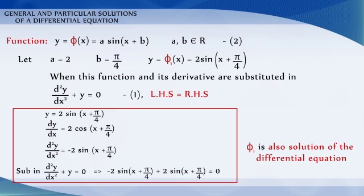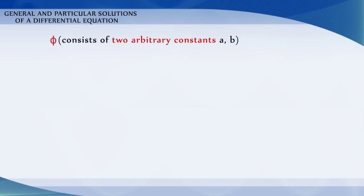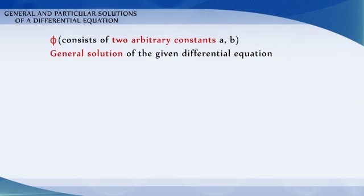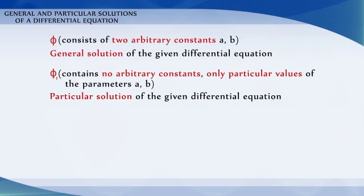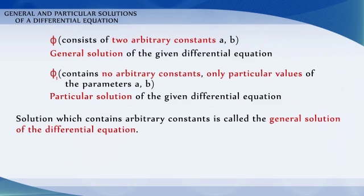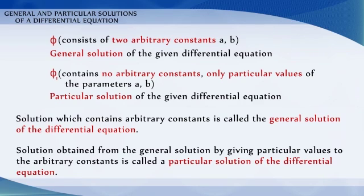Therefore, the function phi consists of two arbitrary constants a and b, and it is called the general solution of the given differential equation. Whereas, function phi 1 contains no arbitrary constants but only the particular values of parameters a and b, and hence it is called a particular solution of the given differential equation. That is, the solution which contains arbitrary constants is called the general solution, and the solution obtained from the general solution by giving particular values to the arbitrary constants is called a particular solution of the differential equation.